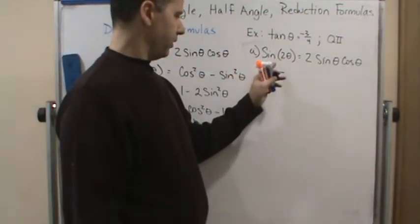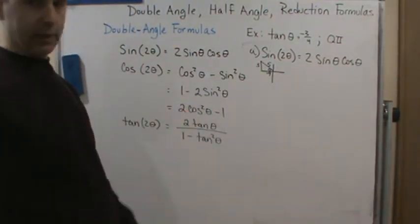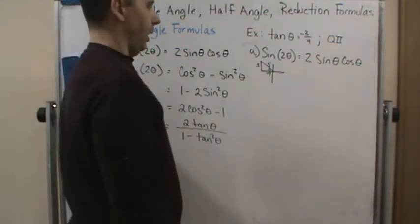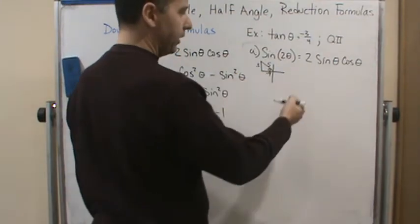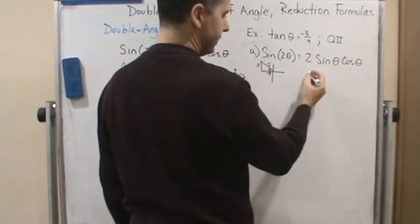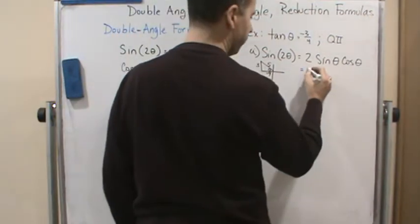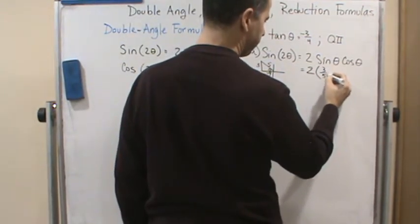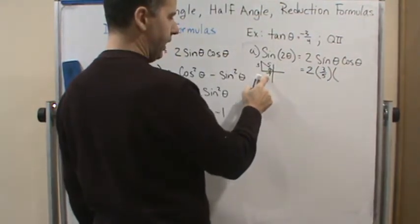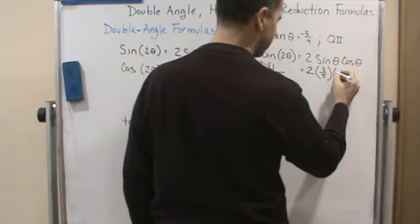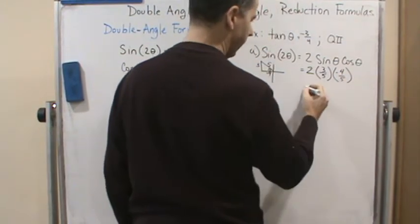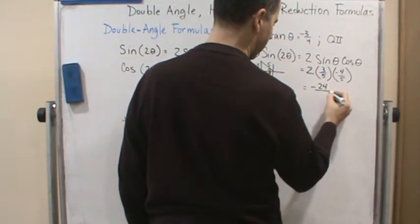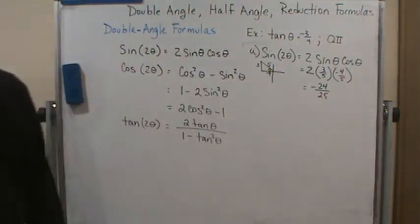But if you know that this is the three, four, five triangle, then you already know what the sides are. But if you don't, use the Pythagorean theorem. So now that we've got this filled out, now we can go ahead and plug in what these are by definition. So two, sine theta is opposite over hypotenuse. That's three-fifths. Cosine theta is adjacent over hypotenuse, so that's going to be negative four-fifths. And so if we just multiply across, we're going to get negative 24 over 25. And we're finished with that one.